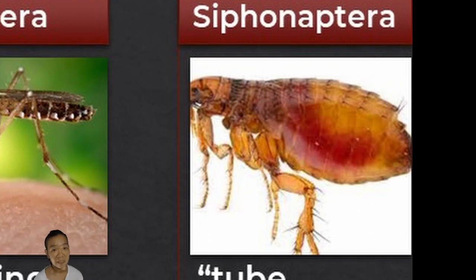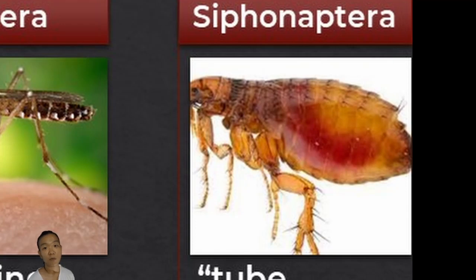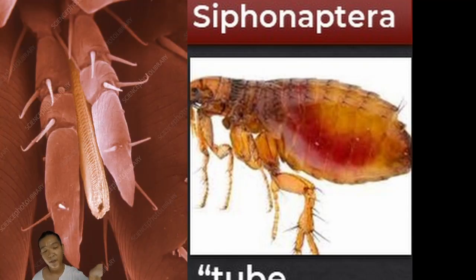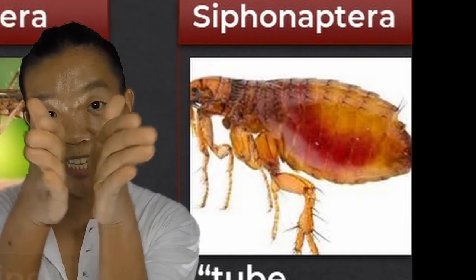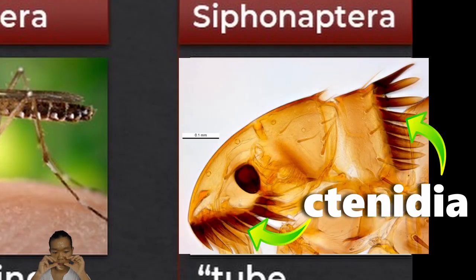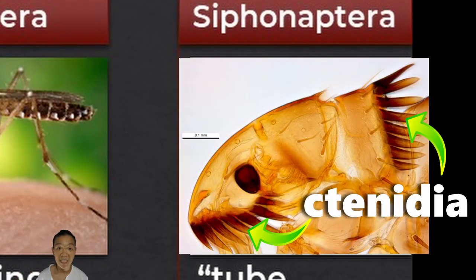Siphonaptera, or the fleas, are ectoparasites of many animals — not just our pets — and are also a vector of bubonic plague. They have sucking mouth parts because they mostly feed on blood. They are wingless, their bodies are laterally flattened, they have long jumping hind limbs, and they have structures called ctenidiae near the mouth and also at the back of the head.